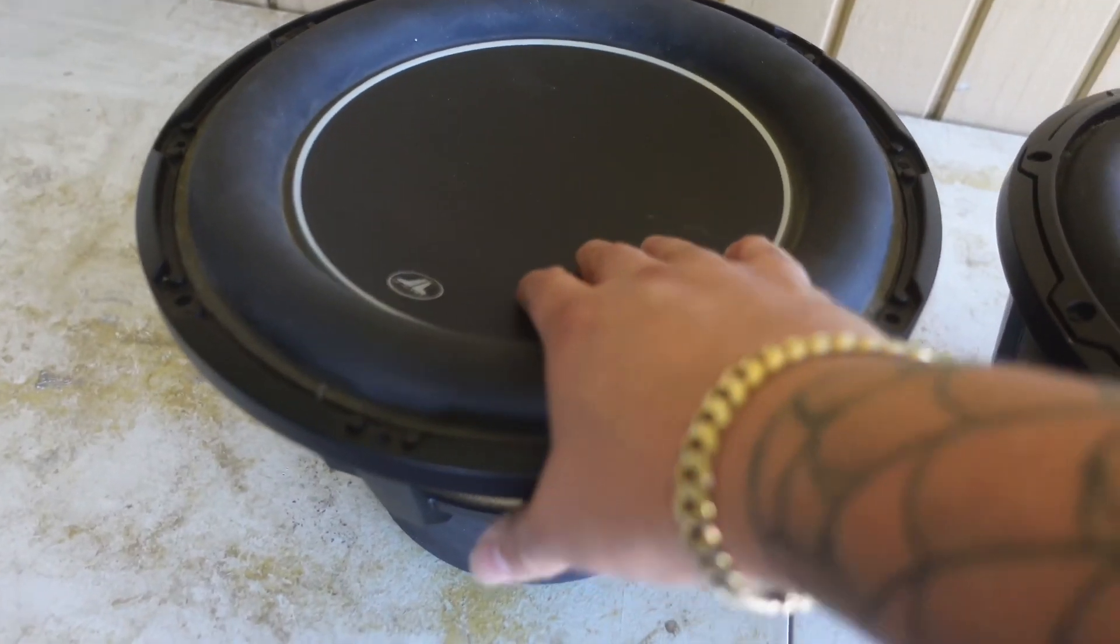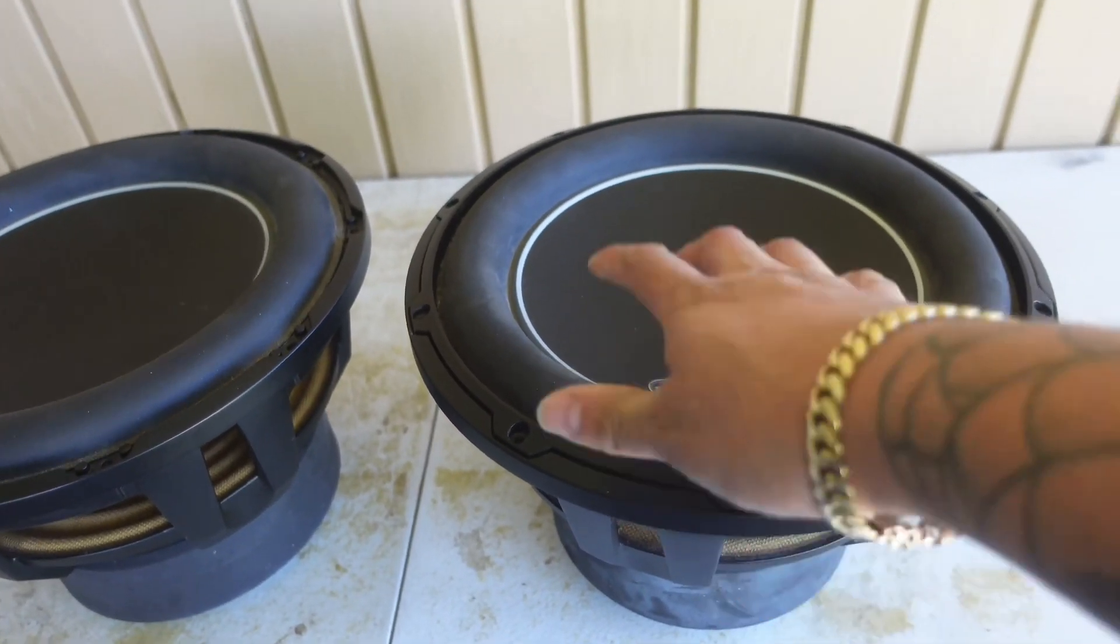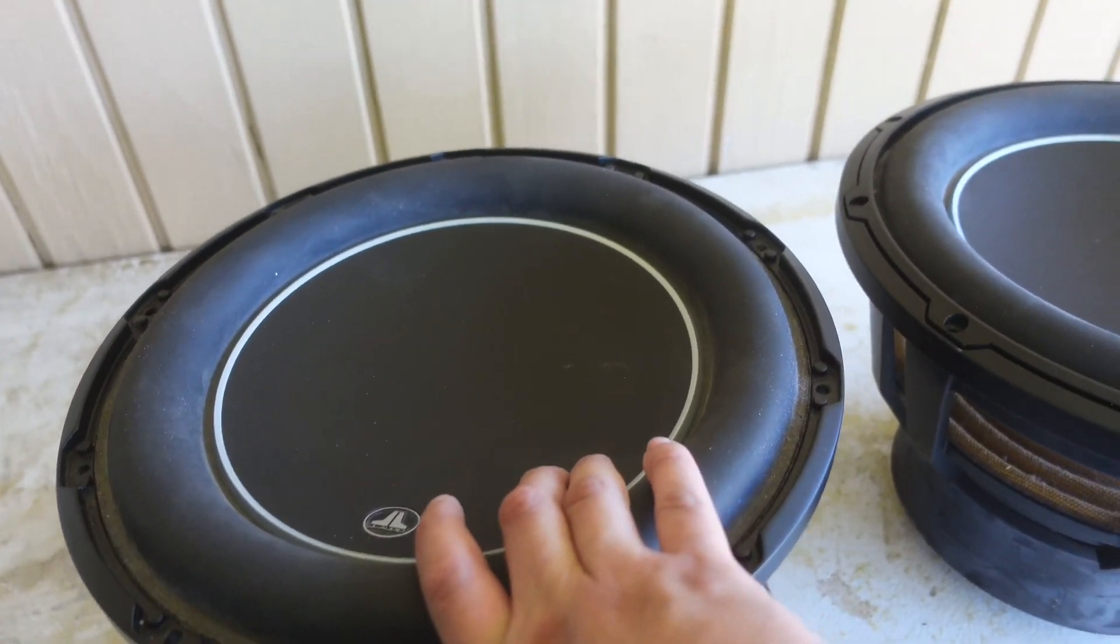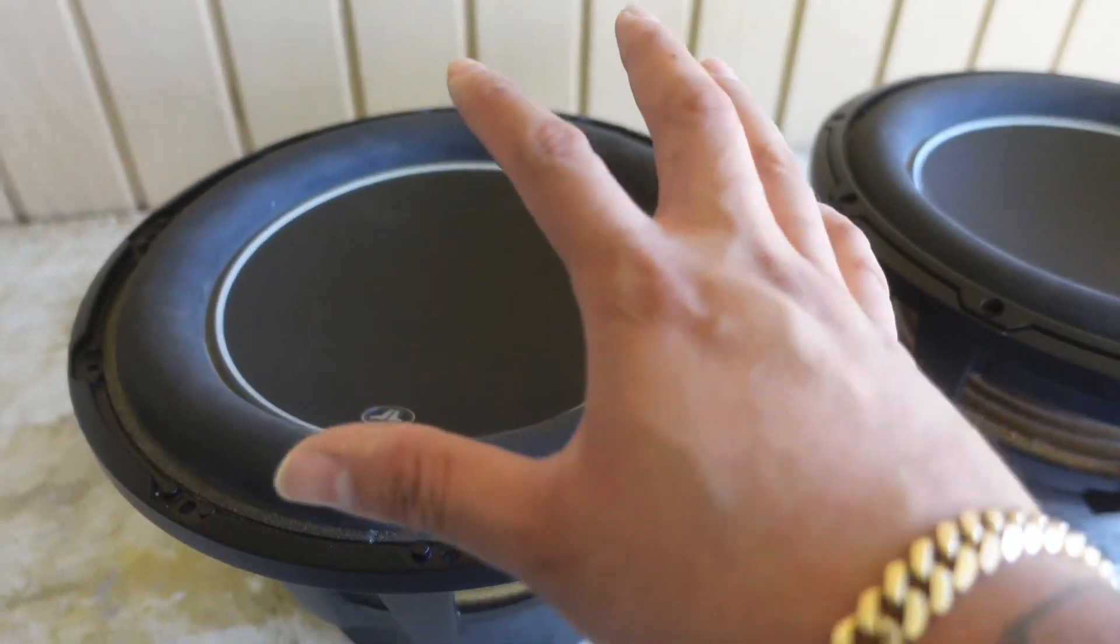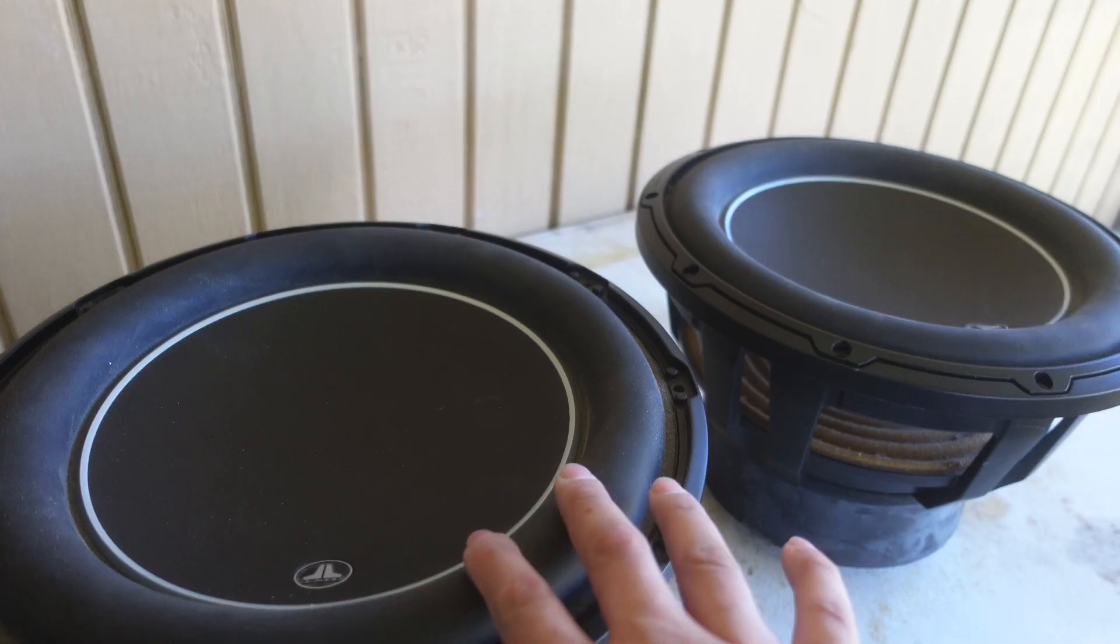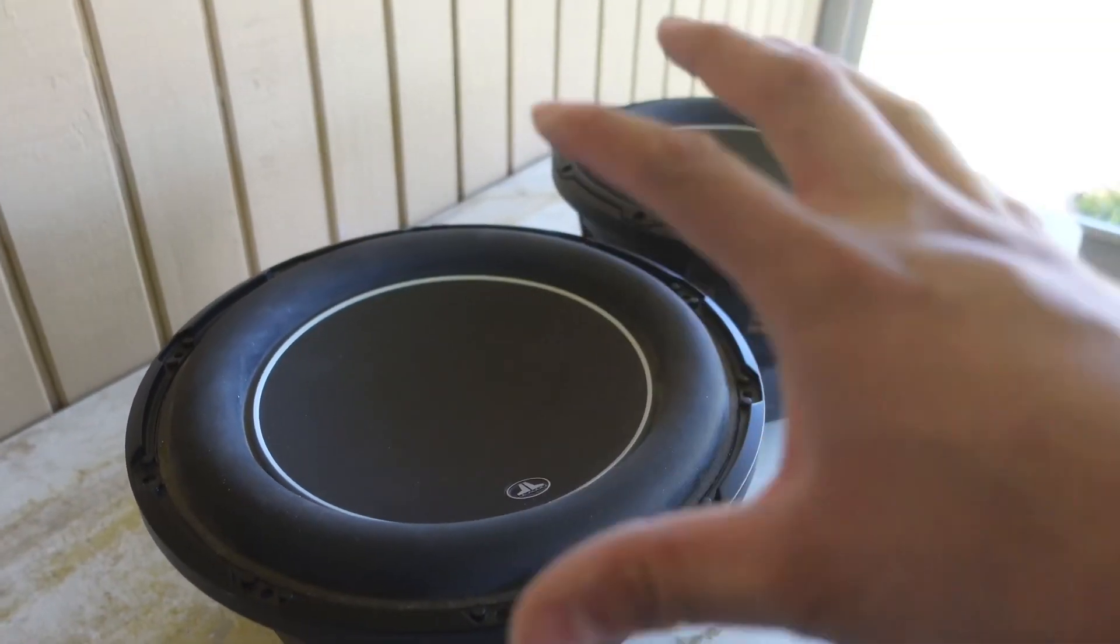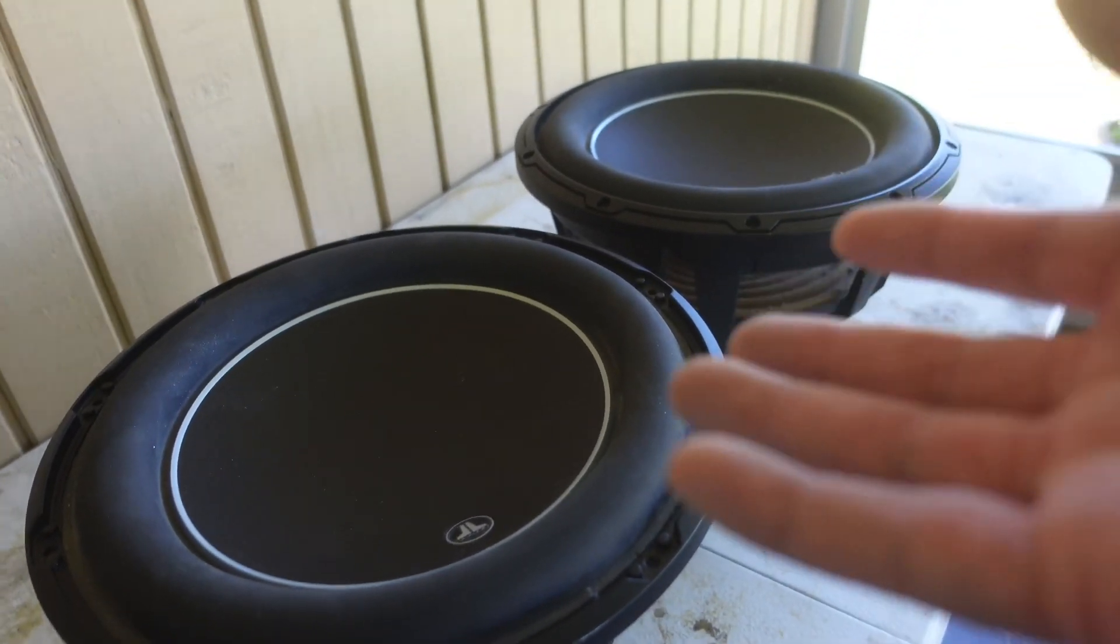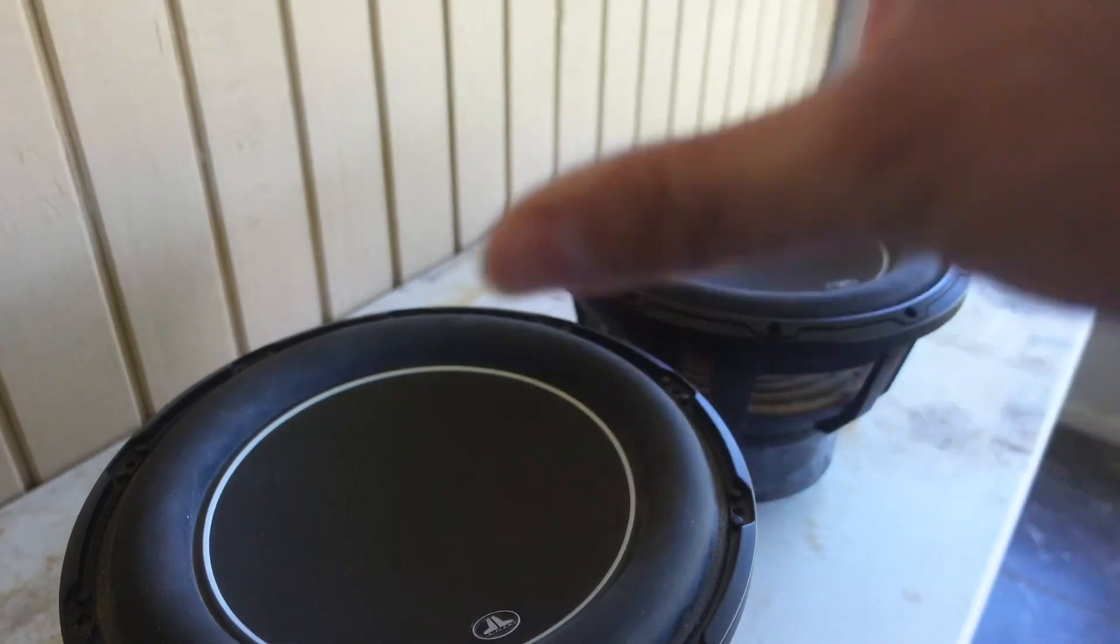We got two 12 JL W6s. These things have been in three different cars and I've built all the boxes for all the installs they've been in. We're going to put these in a Chevy Tahoe and design the box today. These subs are actually going to get a 3000-watt Bass Series Terra Amps. Is that a lot of power? Yes. But we want these things to jam out. It's a ported box, so 2000 watts would have been fine, but what's the fun in that? We're putting 3000 watts on these guys so they can bang.